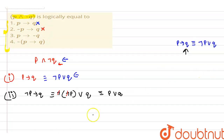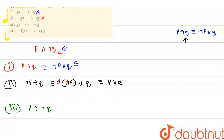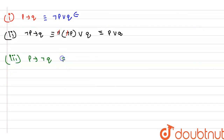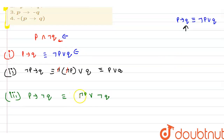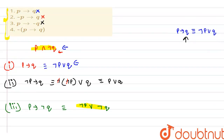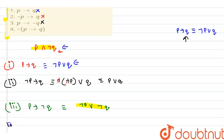Now we check option three, which says p implies negation of q. Applying the implication equivalence, this is also not equivalent to p conjunction negation of q, so option three is also wrong.